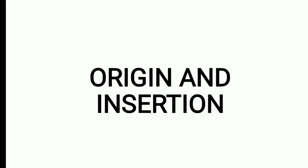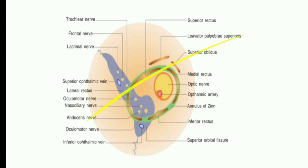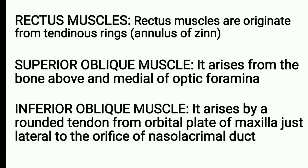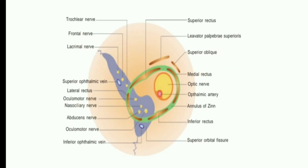Now the origin and insertion of extraocular muscles. The rectus muscles originate from a common tendinous ring, known as the annulus of Zinn, which is attached at the apex of the orbit, as you can see in this diagram.